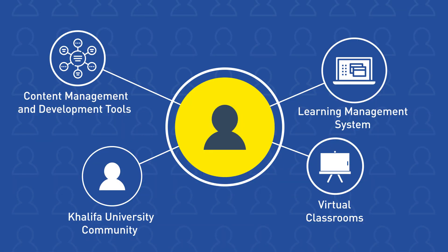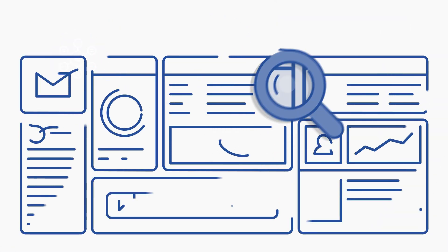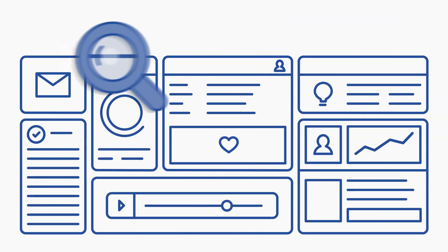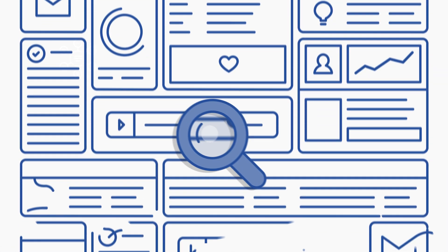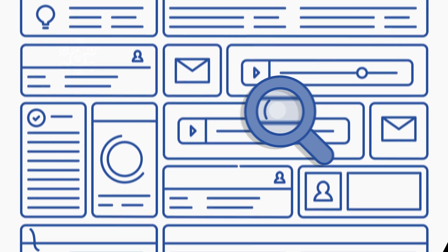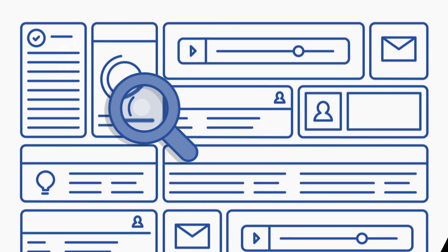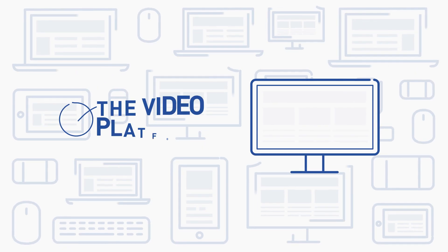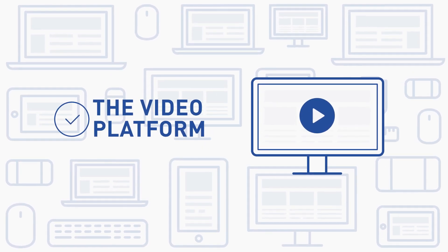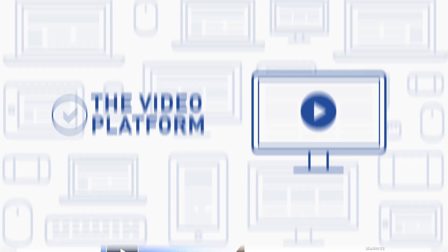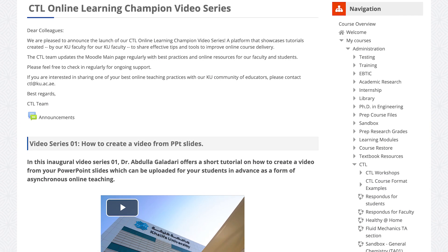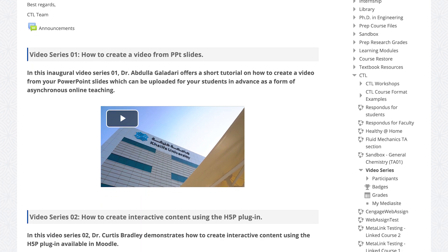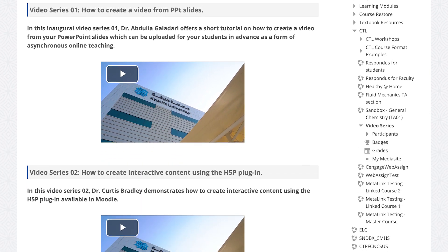The final and fourth layer of KU's online learning ecosystem is the collection of content development and management tools that provide faculty with the resources they need to develop their lessons for delivery in either synchronous or asynchronous teaching modes. These include the video platform, which allows faculty to record their lectures in advance, or while they're delivering them live.